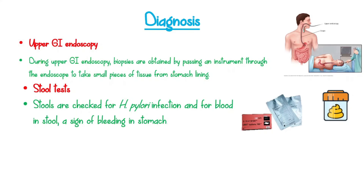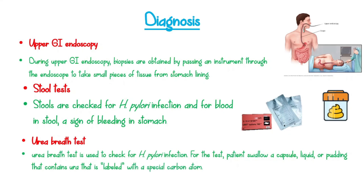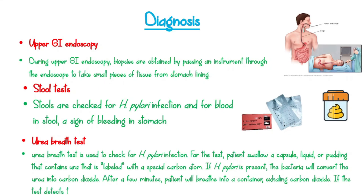Urea breath test: the urea breath test is used to check for H. pylori infection. For the test, patients swallow a capsule, liquid, or pudding that contains urea labeled with a special carbon atom. If H. pylori is present, the bacteria will convert the urea into carbon dioxide. After a few minutes, the patient breathes into a container, exhaling carbon dioxide. If the test detects the labeled carbon atoms, it confirms an H. pylori infection in the digestive tract.